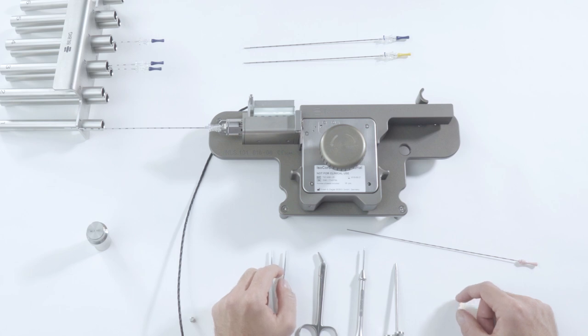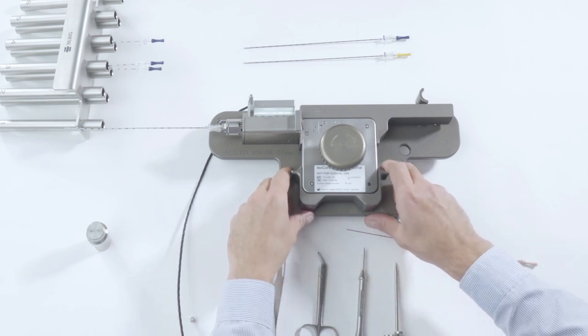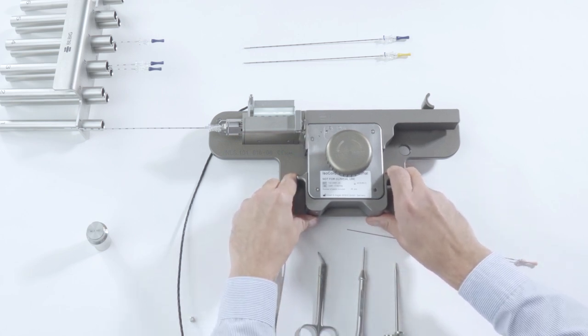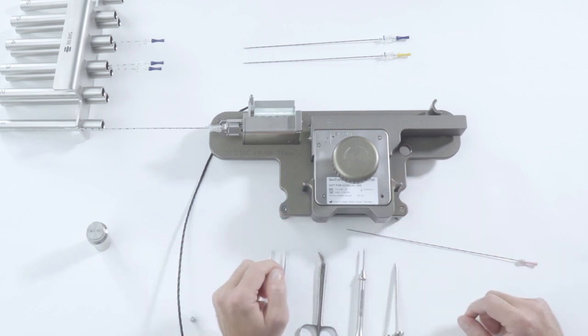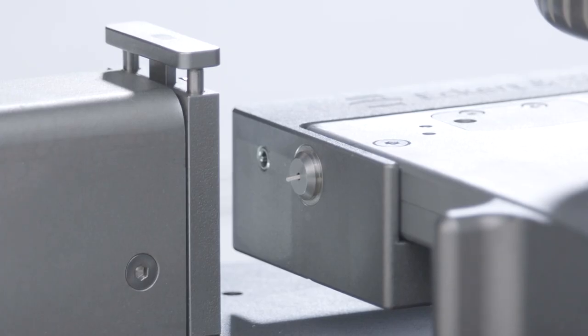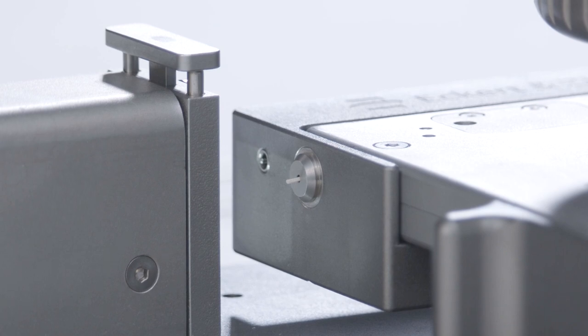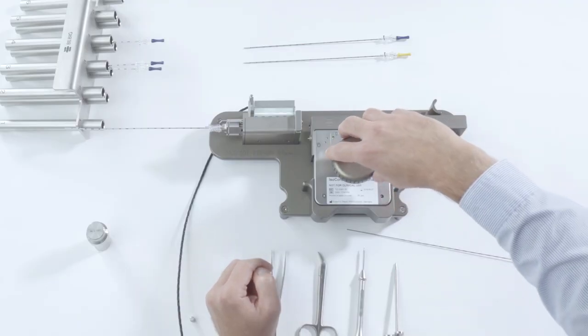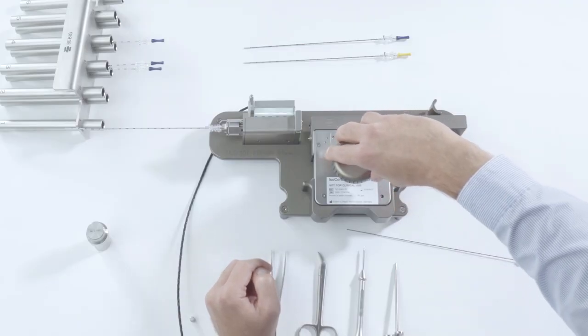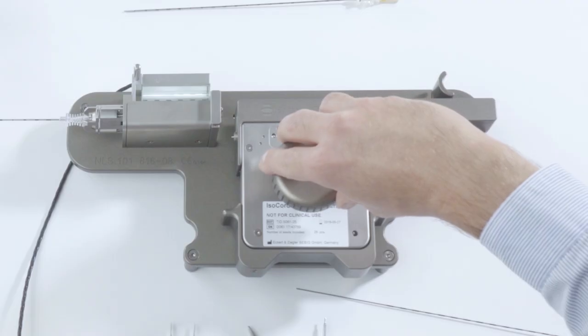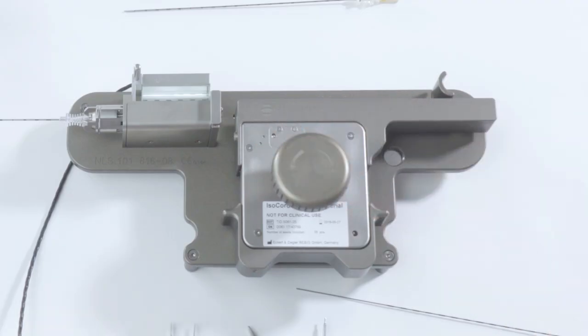Next, use the handles on the magazine holder to move it from the isocord position to the mandrel position. If done correctly, a half spacer will protrude from the socket on the magazine holder. Turn the knob in the direction marked magazine until the end of the seed chain is flush with the socket on the magazine holder.